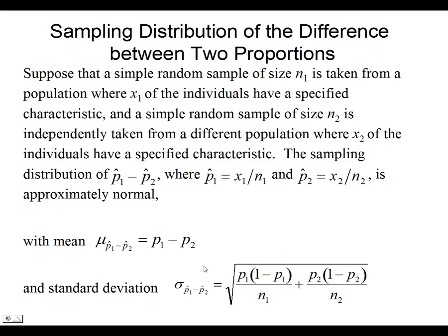The standard deviation is slightly less intuitive. It's going to be the standard deviation of basically the two variances added together. So P1 times Q1 over N1 plus P2 times Q2 over N2. We take the square root of the whole thing to find the standard deviation of P1 hat minus P2 hat.